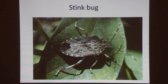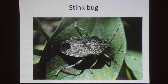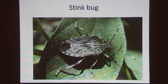This is another insect pest called the stink bug. When they are small, they are green or sometimes black in color, and when they are big, they are brownish. They sting into the fruits and can cause a lot of damage in tomatoes, eggplants, and sweet corn.